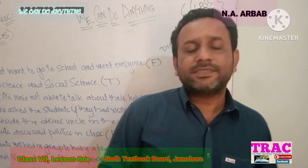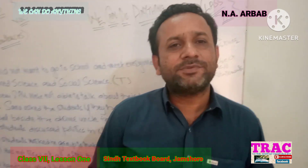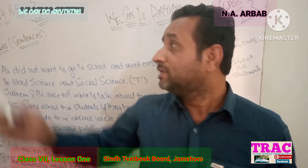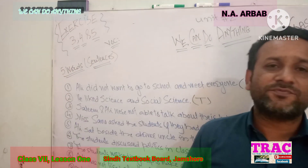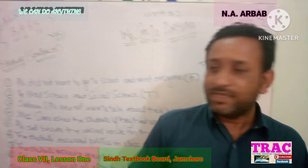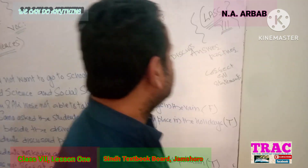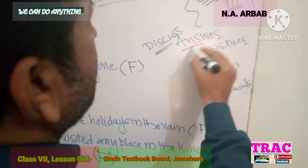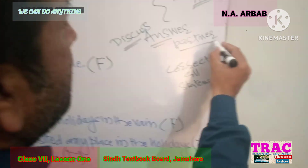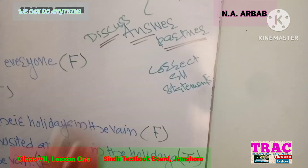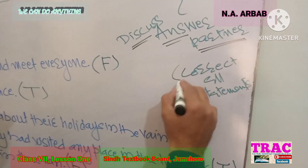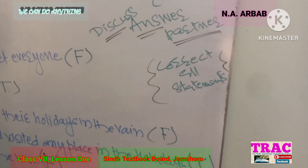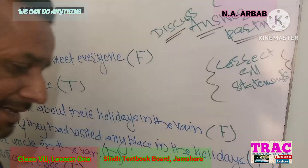Now we have done exercise 4 on true and false. Time for exercise number 5. In exercise 5, whatever you have read, you and your partner discuss the answers with each other and correct all the statements.